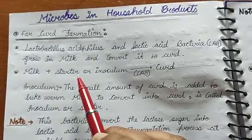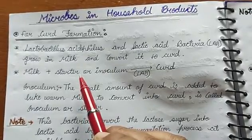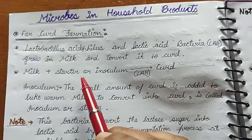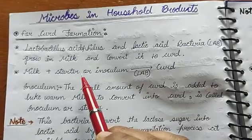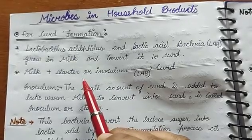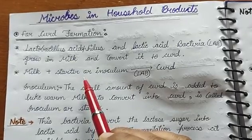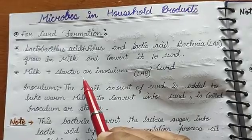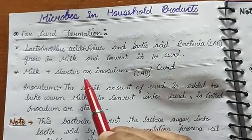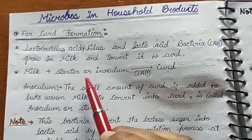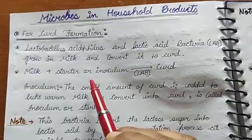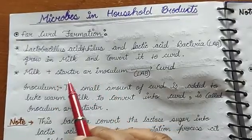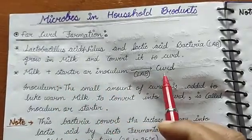The lactose undergoes a fermentation process, producing lactic acid, and this lactic acid causes the milk to change into curd.